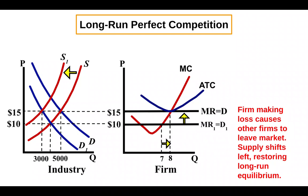Marginal revenue returns to where it was and we're back to break even. What's really important to understand is how we move from short run to long run in this cycle: if there are profits to be made, supply shifts to the right erasing those profits; if there's a loss, supply shifts to the left erasing those losses. That's all for this video on long-run perfect competition — until next time, have a great day.